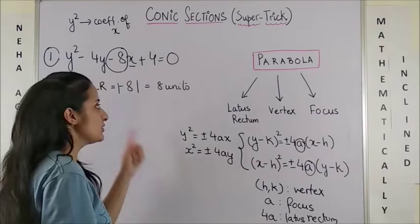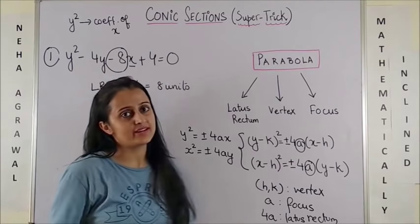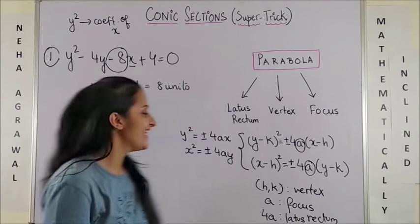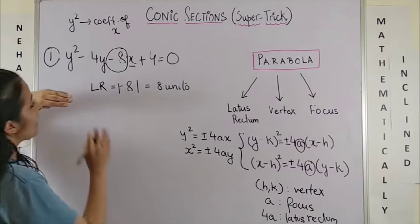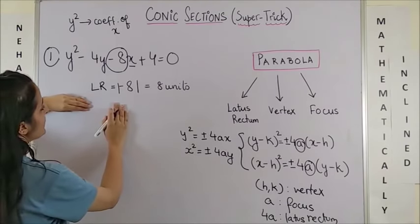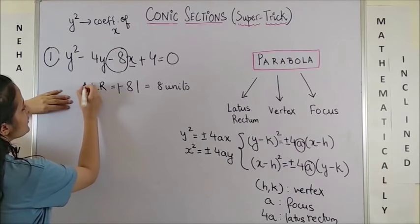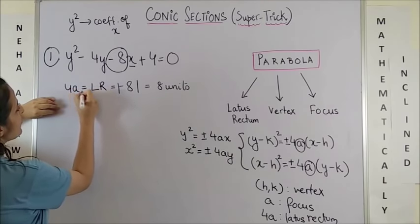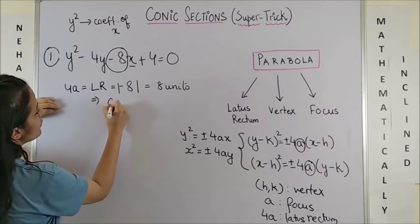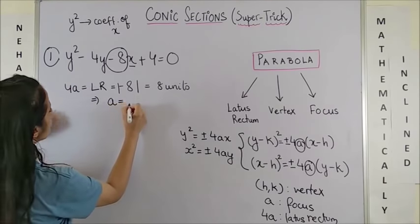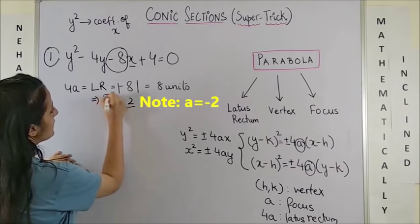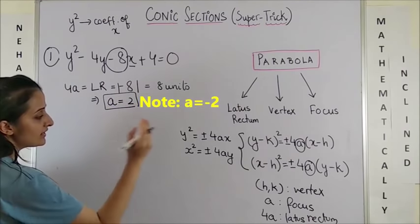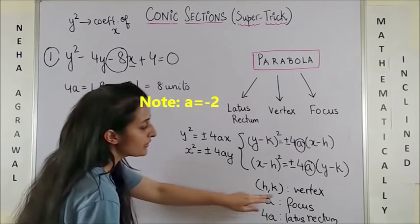Length of the latus rectum just takes one second. We also know the latus rectum equals 4a, so we know a is going to be 2. Let's keep this in mind and move on to calculating the vertex.